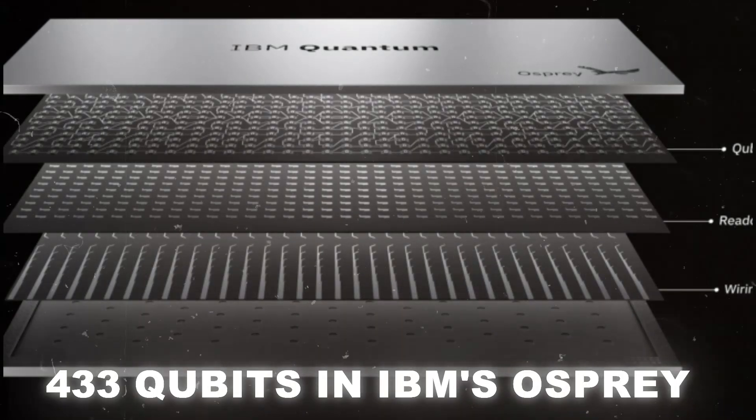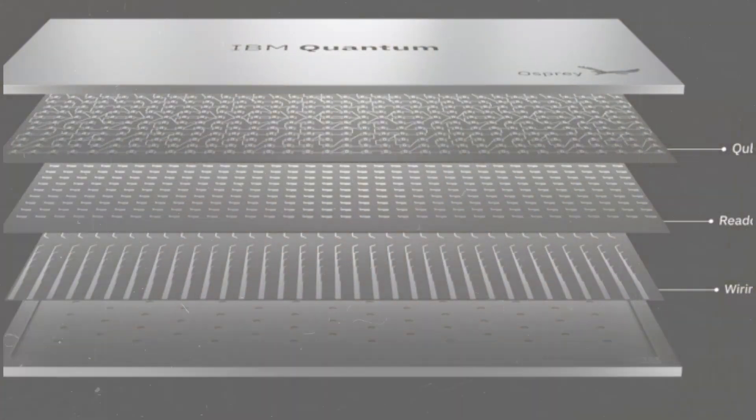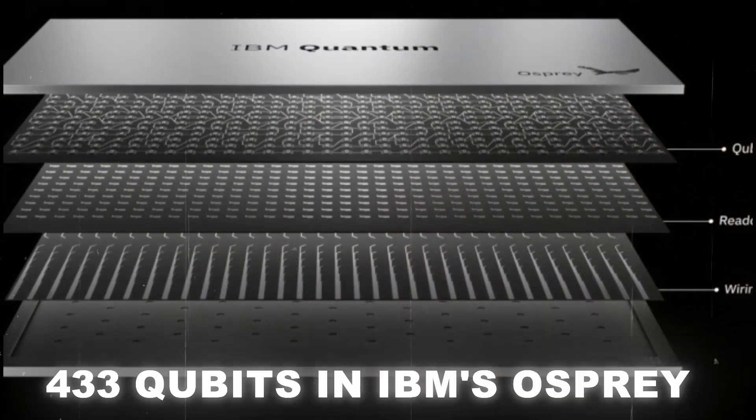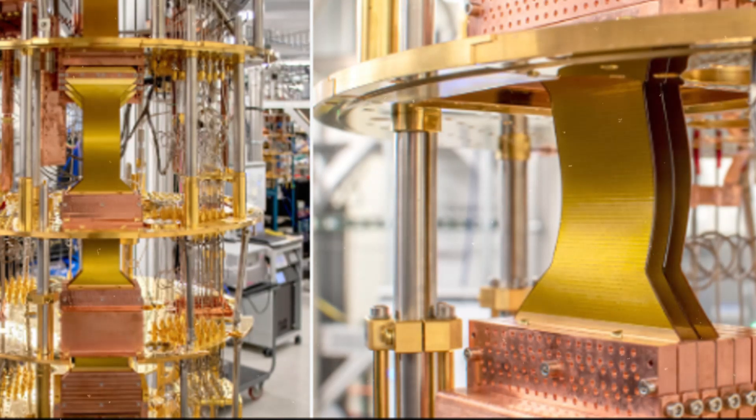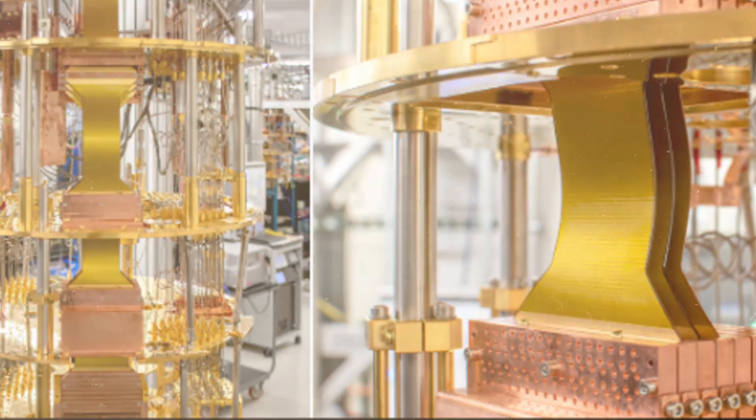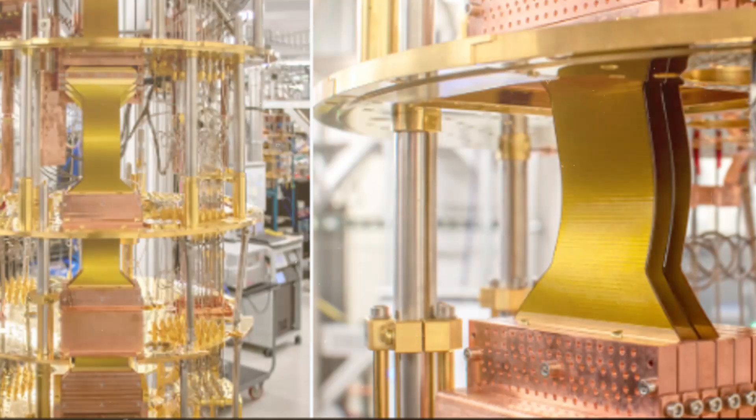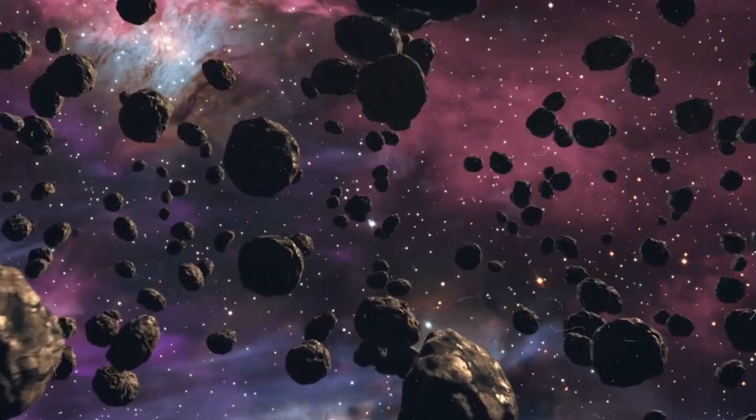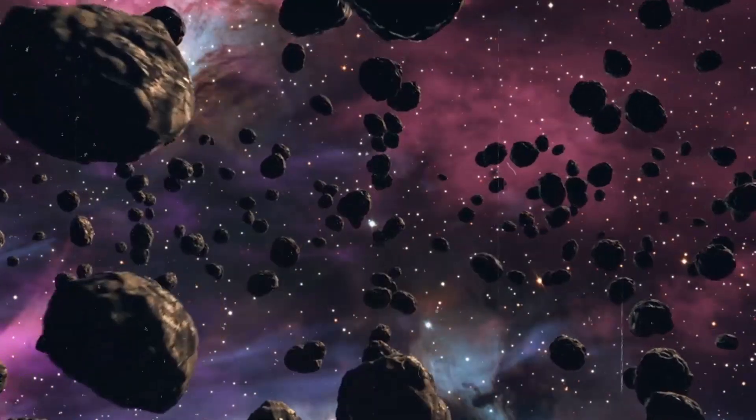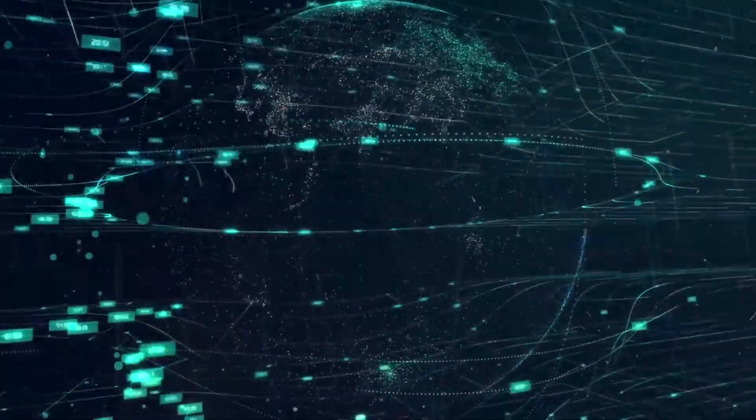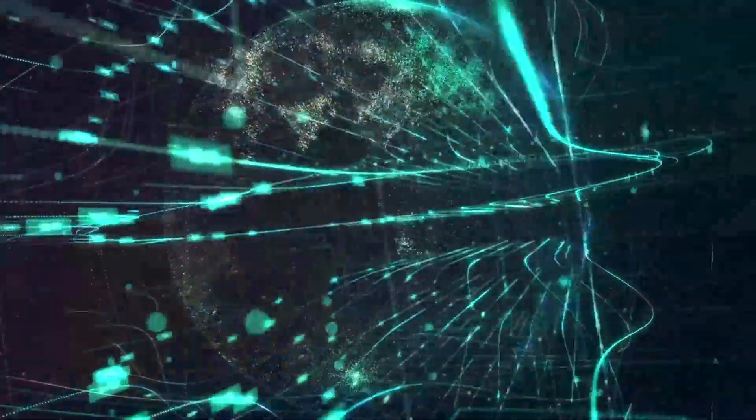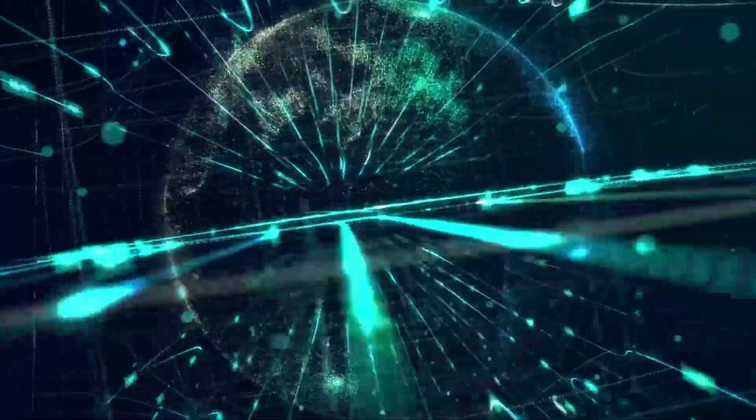There are currently 433 qubits in IBM's Osprey, the world's most sophisticated quantum computer. The company notes that the number of classical bits that would be necessary to represent a state on the Osprey processor far exceeds the total number of atoms in the known universe, which may not seem like much. Furthermore, they fail to mention that it is only effective for 70 to 80 millionths of a second until noise overwhelms it.